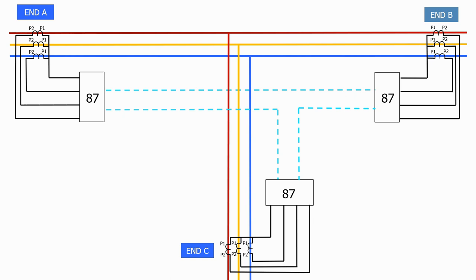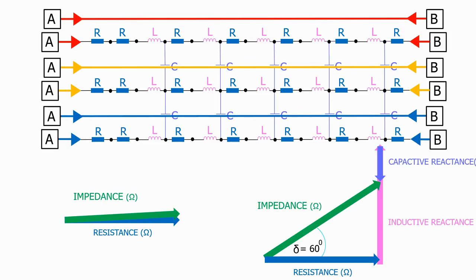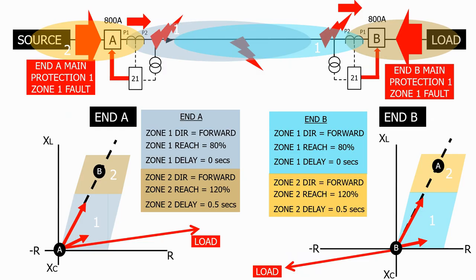The other main type of feeder protection we use is impedance or distance protection. We will look at all of the basic principles of this critical protection. You will understand how impedance protection operates and how it can be configured to a particular feeder circuit.